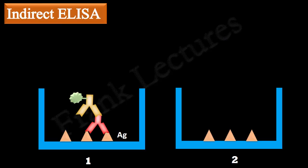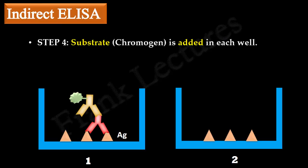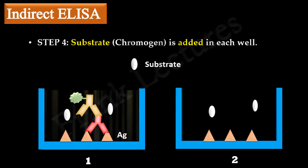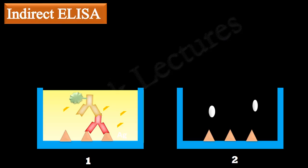In the fourth and final step, substrate specific for the enzyme linked to the secondary antibody is added in each well. In well 1, since enzyme is present, it acts on the substrate and color development can be seen — this is a positive test. In well 2, no enzyme-linked antibody is present, so there is no enzyme to act on the substrate, and hence no color development. This is a negative test.